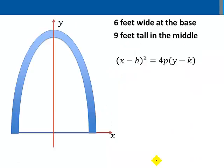So here we have our arch on an xy coordinate system. The base is six feet wide, so along the x-axis our arch will meet the x-axis at the points (3,0) and (-3,0). Our arch has a height of nine feet in the middle, giving us a vertex of (0,9).